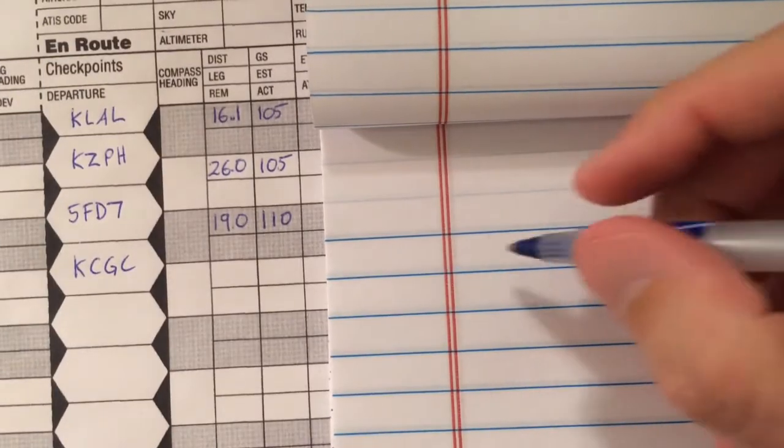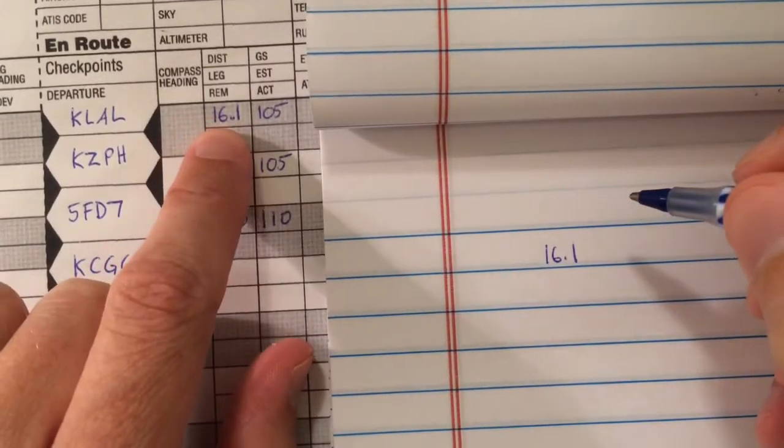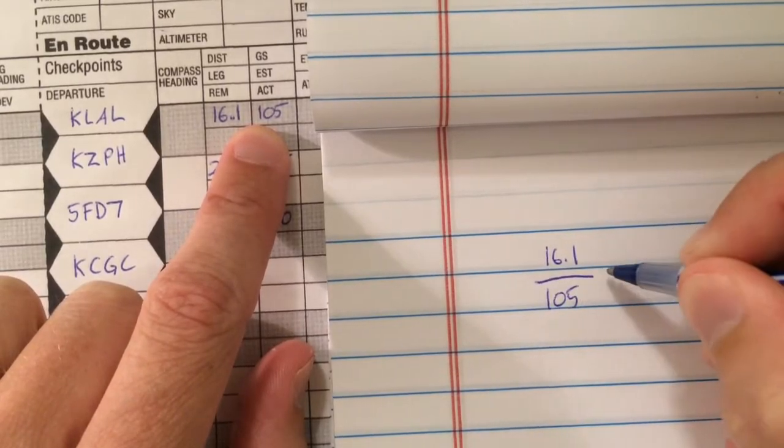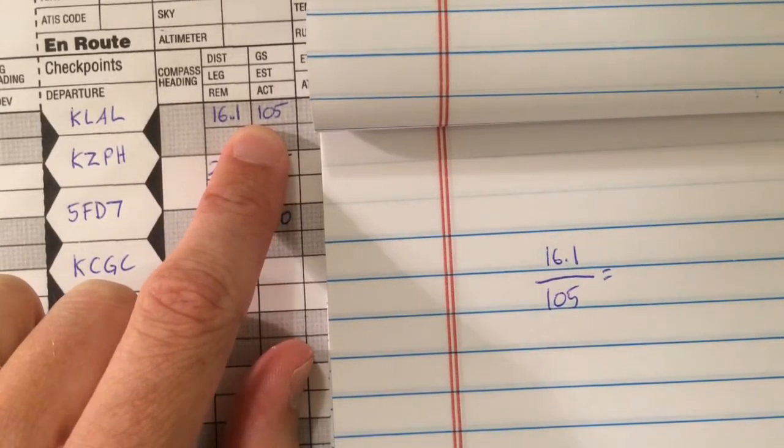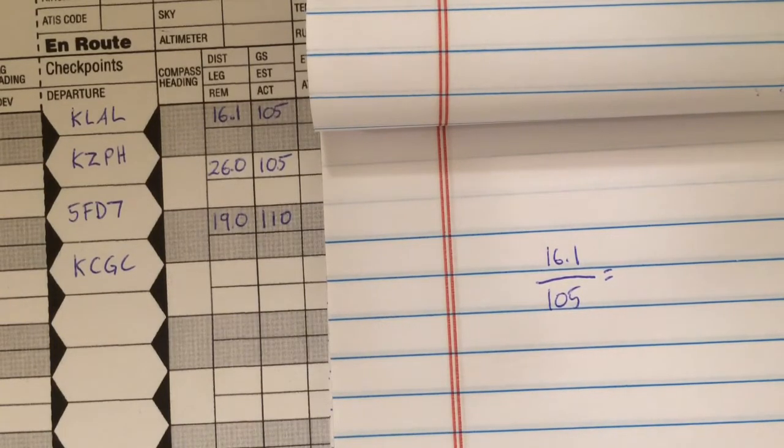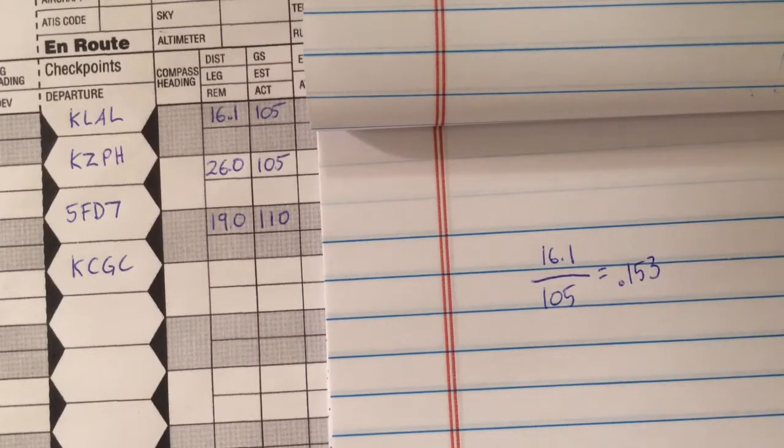So just by way of review, to compute this, you would simply take 16.1 nautical miles and you would divide it by your ground speed, which is 105. This is going to give you an answer in hours. So 16.1 divided by 105 is 0.153, and this is in hours.